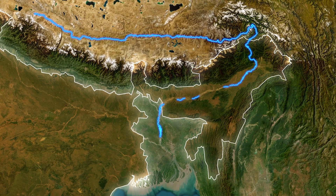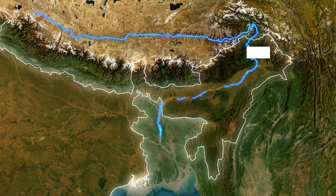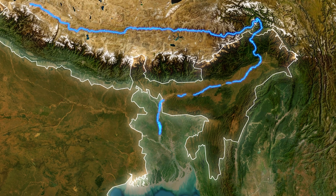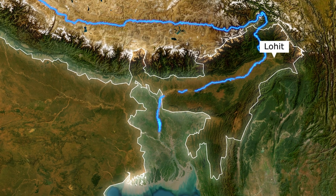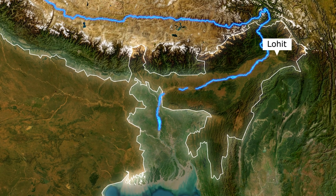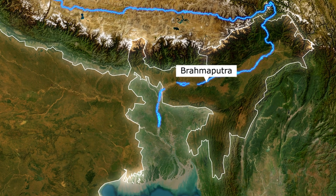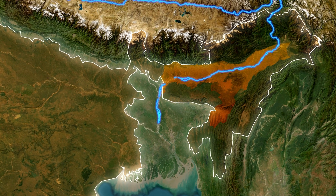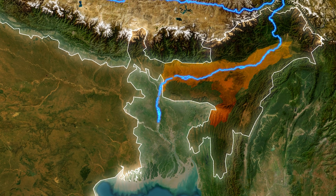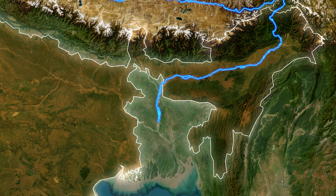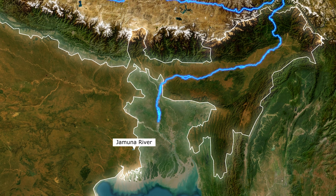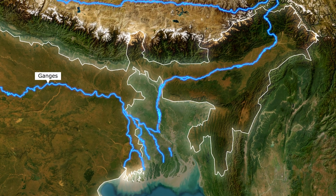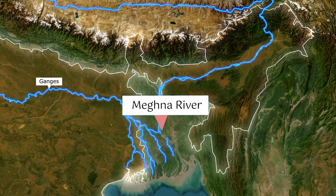The river enters India through Arunachal Pradesh, where it is called Siang or Dihang. Once it receives its major left tributaries — Dibang and Lohit — the river becomes the Brahmaputra, flowing through the fertile plains of Assam. It is joined by many more tributaries before entering Bangladesh as the Jamuna river.